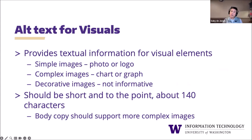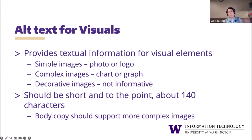Alt text for visuals. Alt text provides textual information to visual elements such as images, charts, and graphs, and it really should be a brief description of the image and why that image is relevant. Your body copy is going to provide more information about why that complex chart or graphic is included, but the alt text itself should be short and to the point — usually about 140 characters or so, about the length of a tweet. It really is just enough information to communicate the idea without overburdening the user with unnecessary detail.